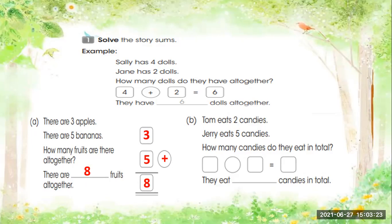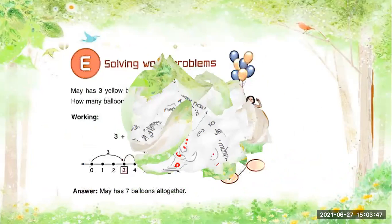Now in letter B: Tom eats two candies and Jerry eats five candies. How many candies do they eat in total? We will write in horizontal form. Two plus five is equals to seven. So they eat seven candies in total.